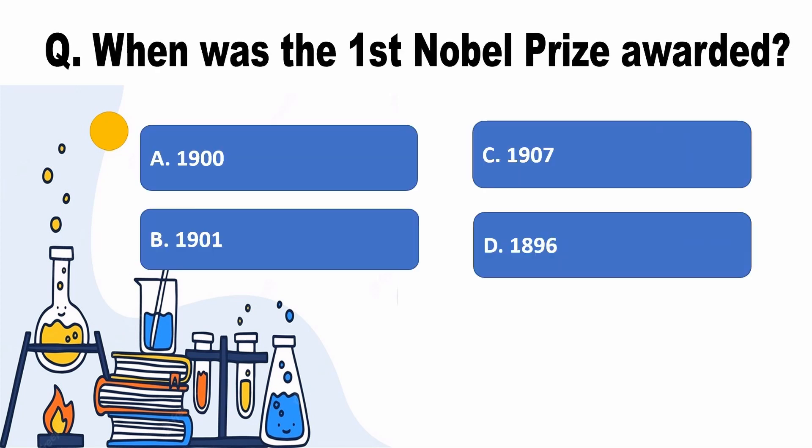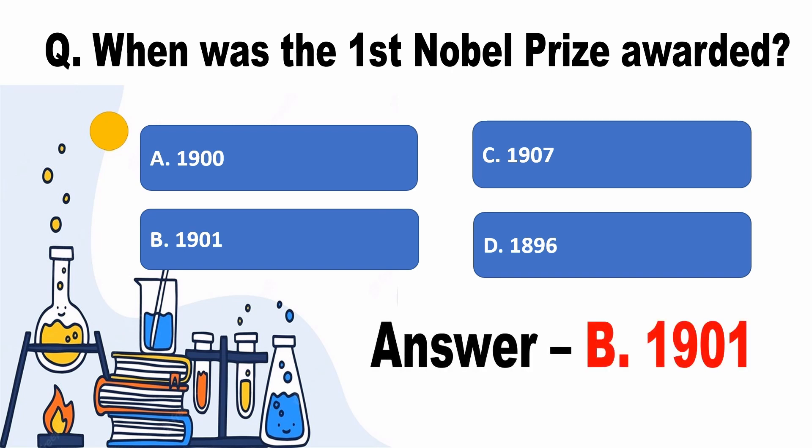When was the first Nobel Prize awarded? Answer B, 1901.